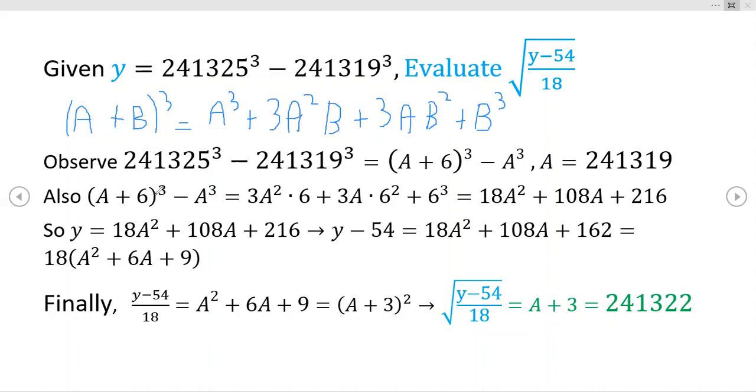And that's exactly what we exploited right here. A plus six quantity cubed, the a cube term goes away. And you're just left with literally this term, this term, and this term. As you can see right here, b cubed corresponds to six cubed, three a b squared corresponds to this term right here, and three a squared b corresponds to this term right here.